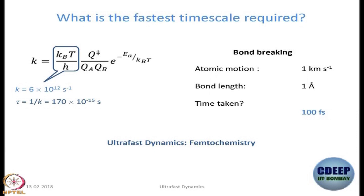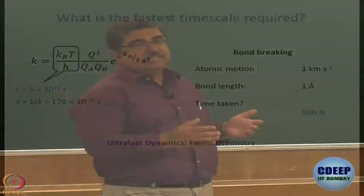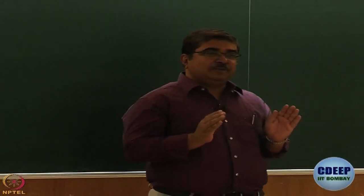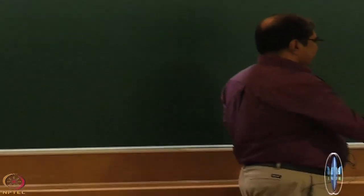We stopped asking: how do you measure time in femtoseconds? As we know, no electronics can measure such fast times directly. So we need an indirect method, and the method we are going to use builds upon the same kind of principle as what we studied in the beginning of the course — time domain spectroscopy, Fourier transform spectroscopy.